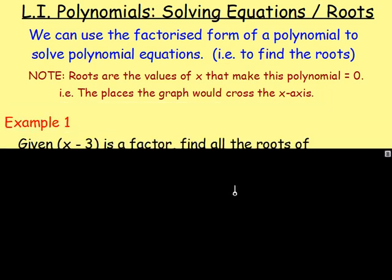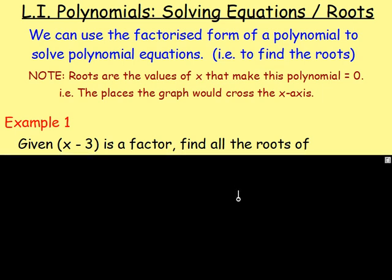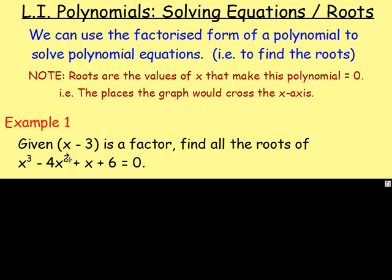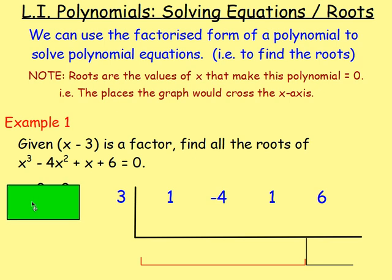Example number one: given x minus 3 is a factor, find all the roots of x cubed minus 4x squared plus x plus 6 equals zero. We're told right away that x minus 3 is a factor. If x minus 3 is a factor, you can set that equal to zero, change the subject of the formula to x, solve it for x, and you get x equals 3. Therefore, x equals 3 is going to be a root.